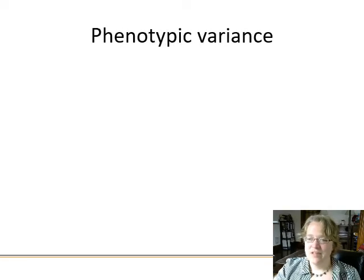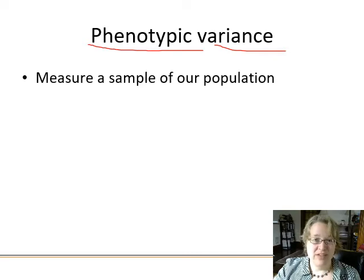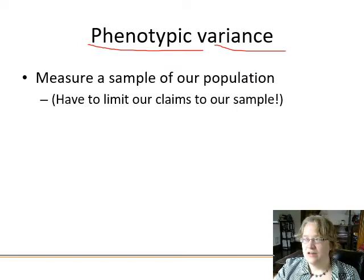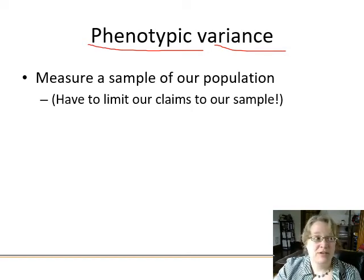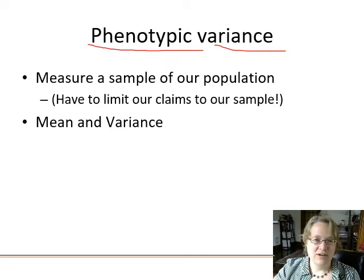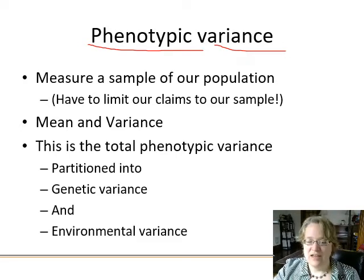When looking at phenotypic variance, you take a measure from a sample of a population and must limit your claims to that sample. For instance, if you sampled three vernal pools in Tully and made a claim about New York State, that's not valid — you can only claim something about vernal pools in Tully. We need to look at the mean and variance of a particular phenotype, so it needs to be quantitative. The total phenotypic variance is partitioned into genetic variance and environmental variance.